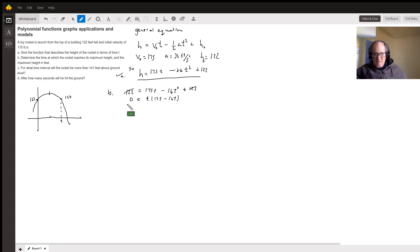So then half of that is 5-point-something. Plug the 5-point-something back up into the height equation to get your maximum. So there's that.